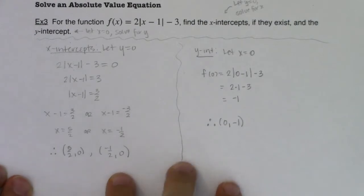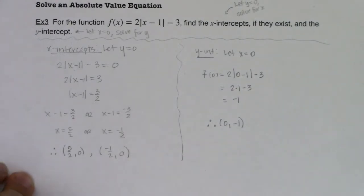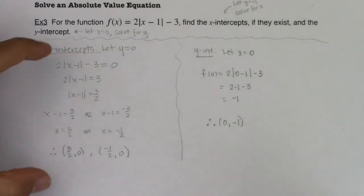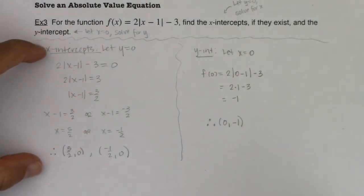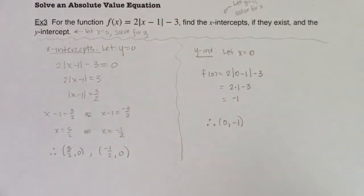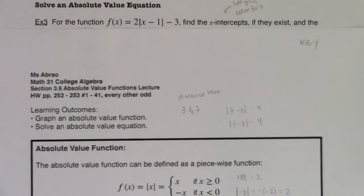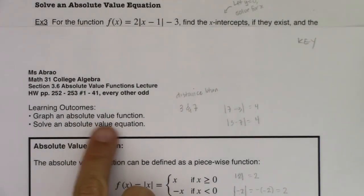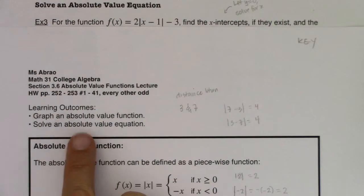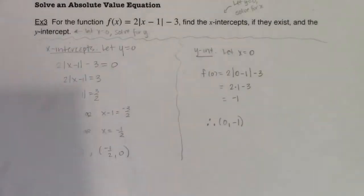So we're going to keep those three points in mind. I'm going to flip over to the calculator and show you how it can assist you in finding the x-intercepts and y-intercepts — two different techniques. Once we finish up with the calculator, we'll be done with this section. In this section we were graphing absolute value functions and solving absolute value equations through the lens of finding x-intercepts. I'll see you in a bit.